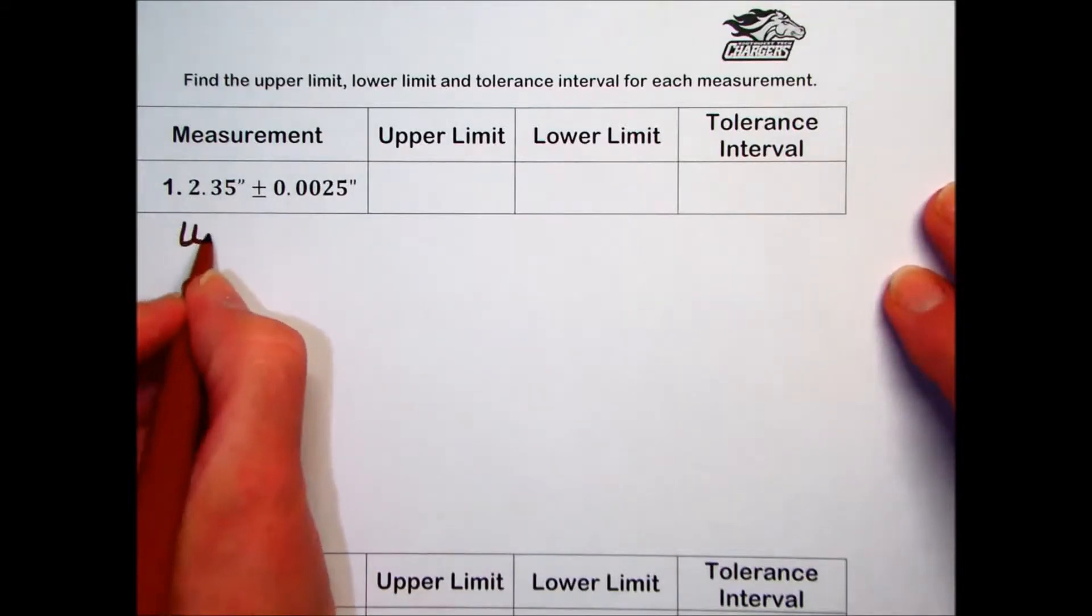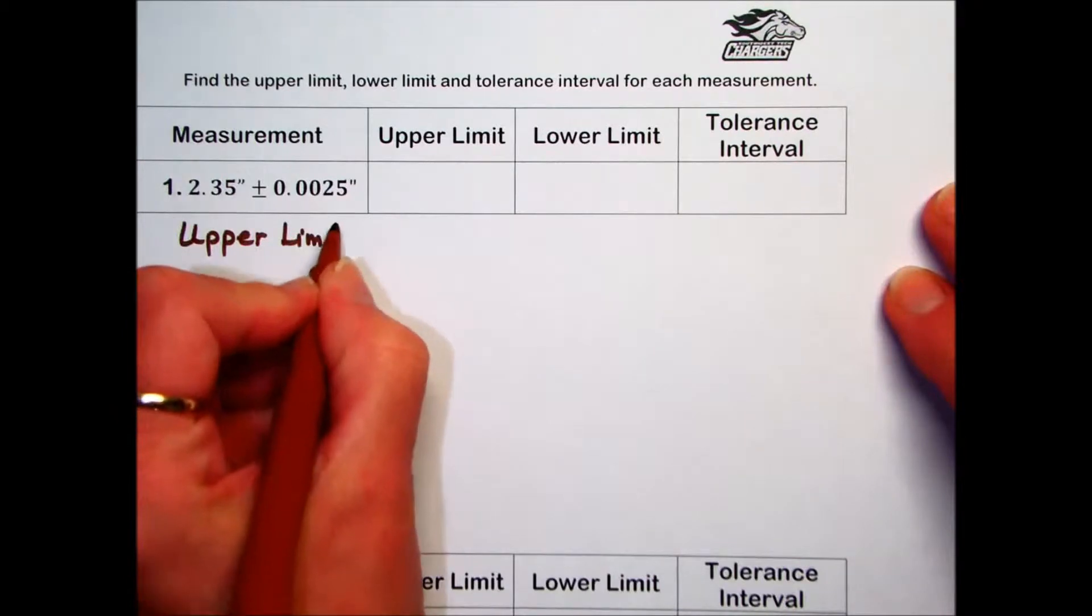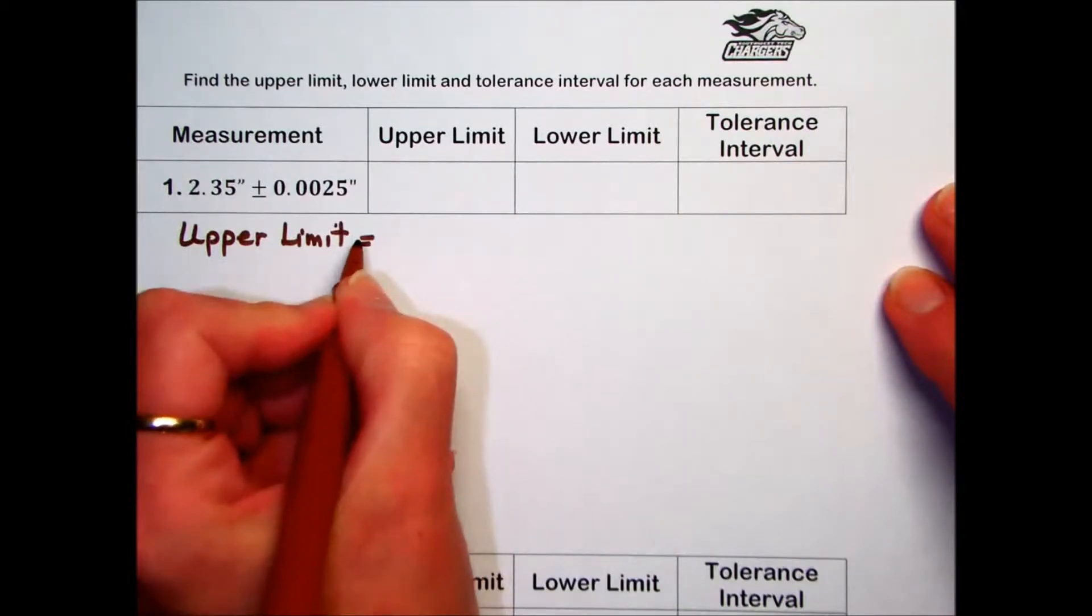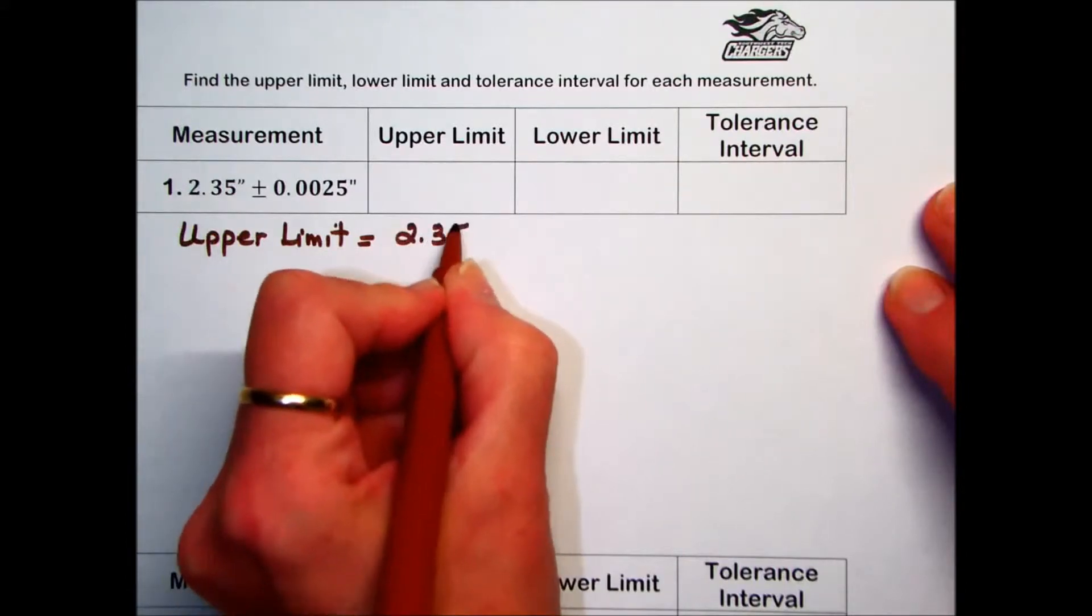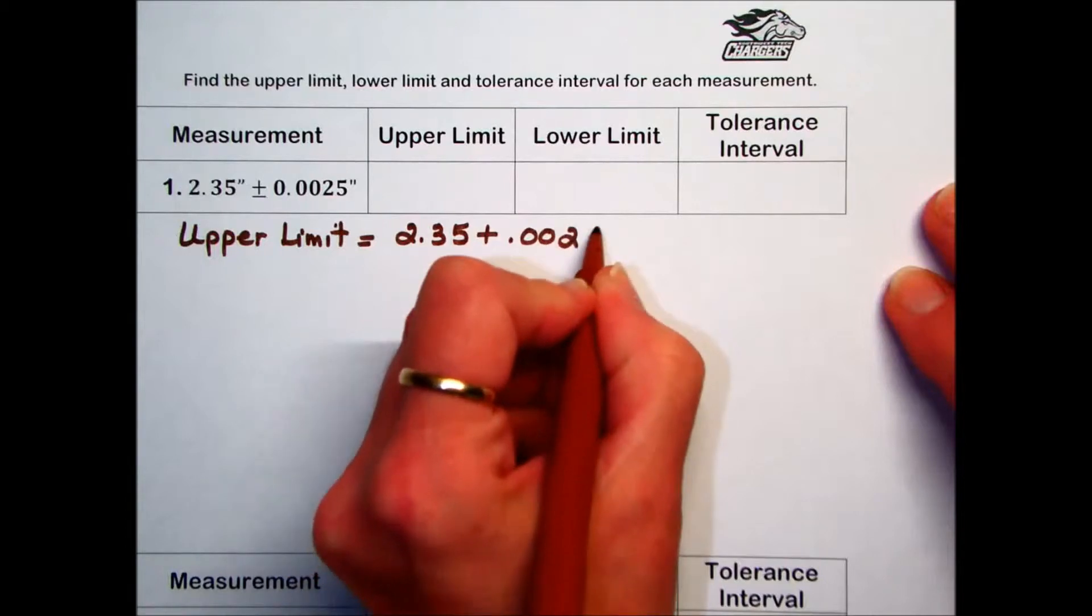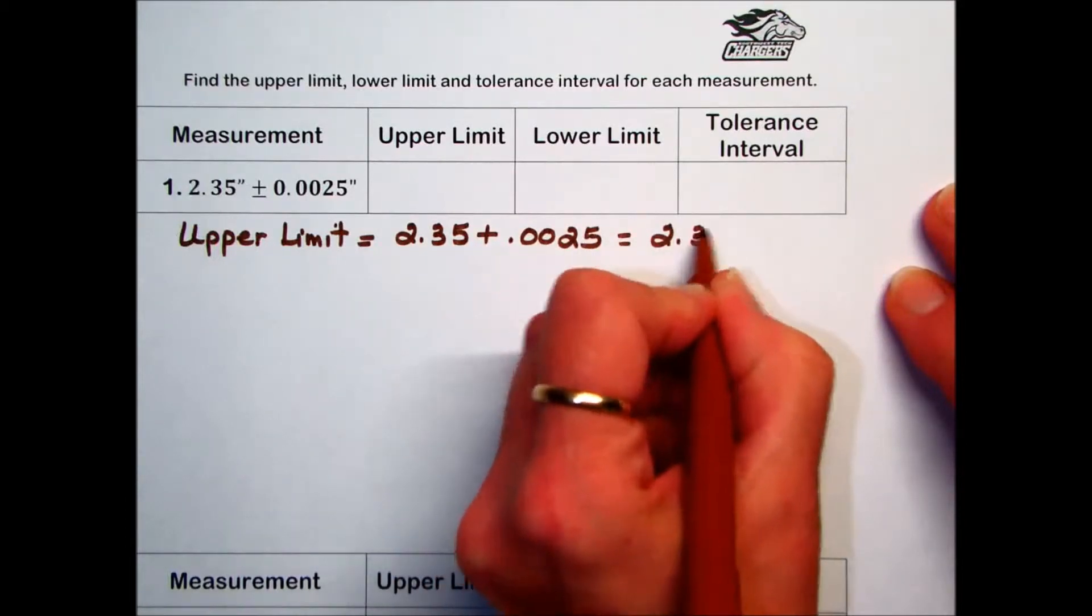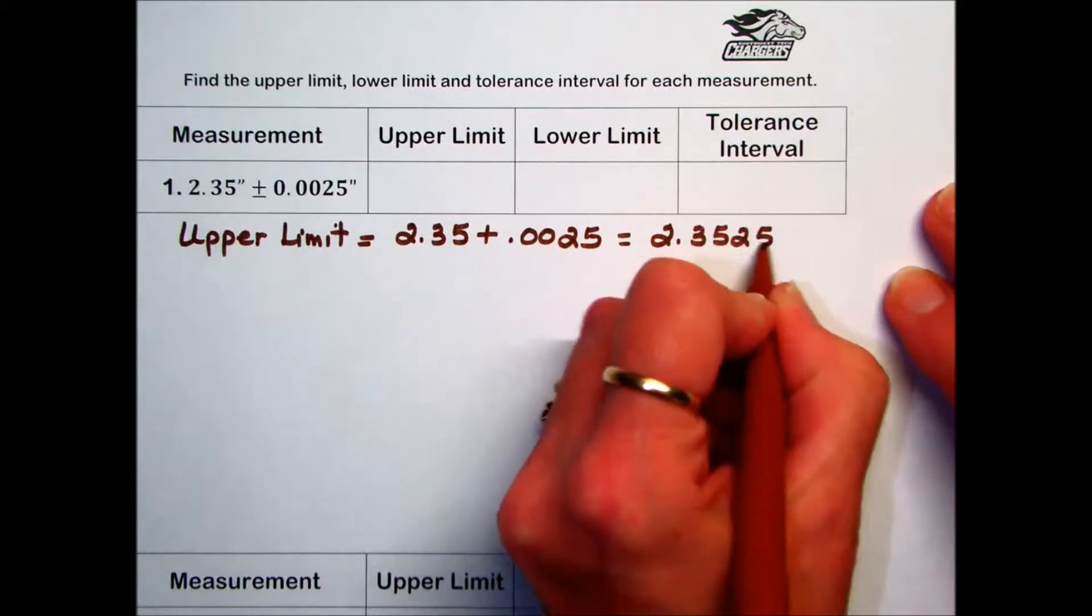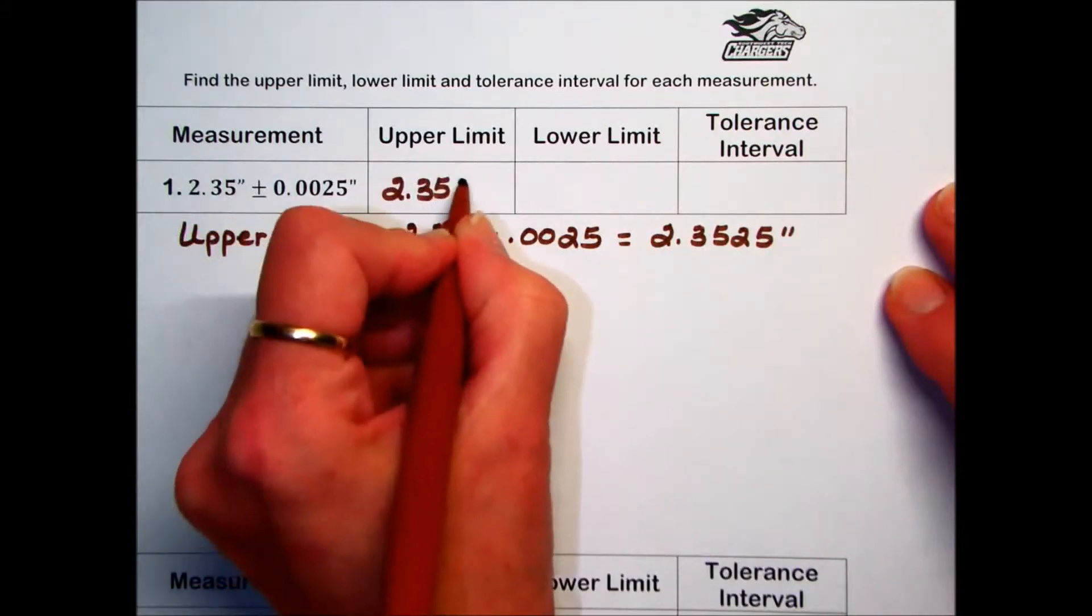To find the maximum or the upper limit, we take that ideal or standard measurement of 2.35 and add the tolerance to it, resulting in 2.3525 inches. This would be the maximum length that would be acceptable.